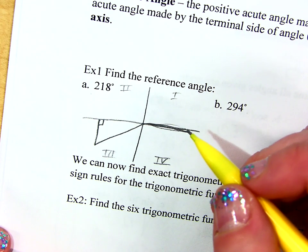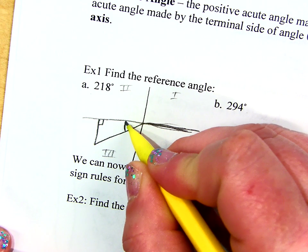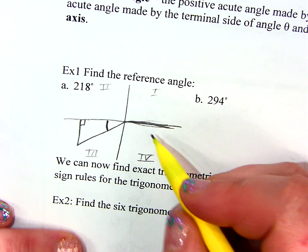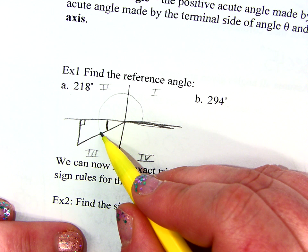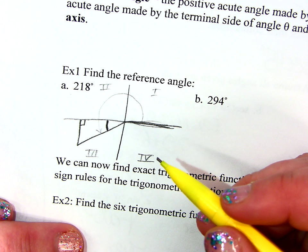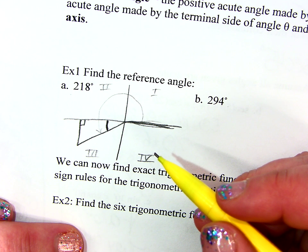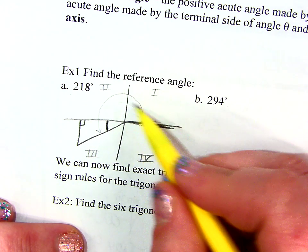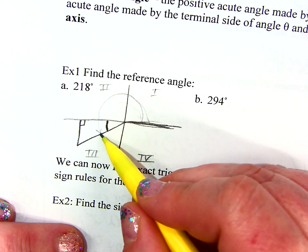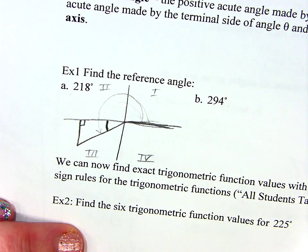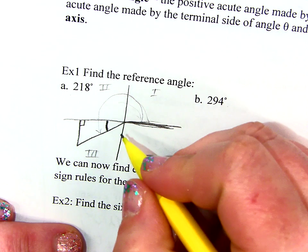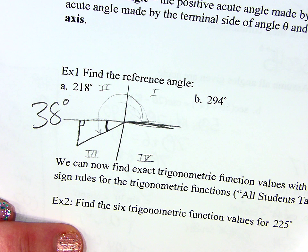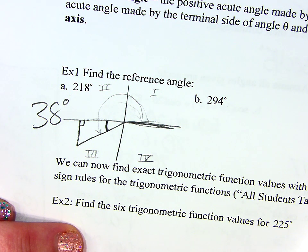So the reference angle is this angle right here. So what would the measure of that angle in the triangle be? That's what a reference angle is. So 218 degrees is this whole big thing, but the reference angle is just this little piece. So how would I find that in this case? Subtract 180, right? Because this whole flat line, that was 90, this is 180. So I did 180 and then this much more. So let's just do 218 minus 180, so that's 38. So my reference angle would be 38 degrees.